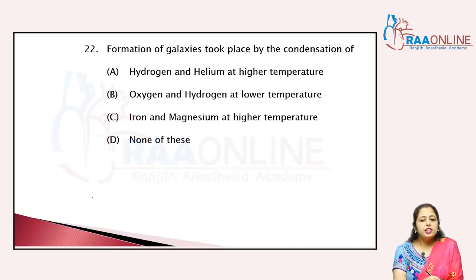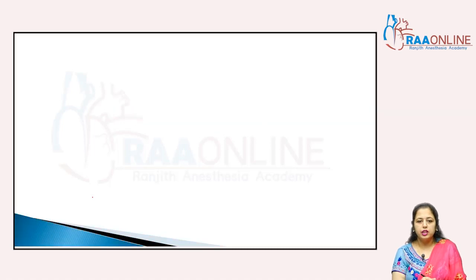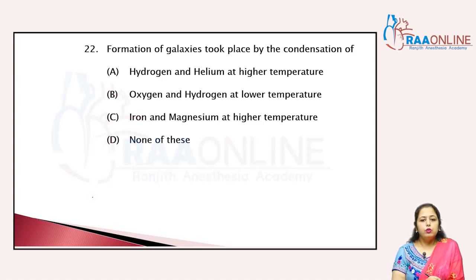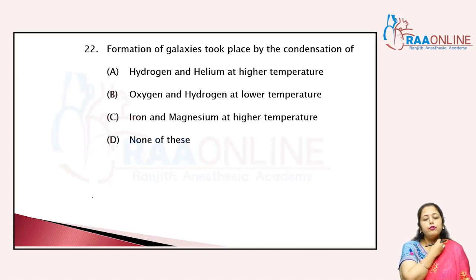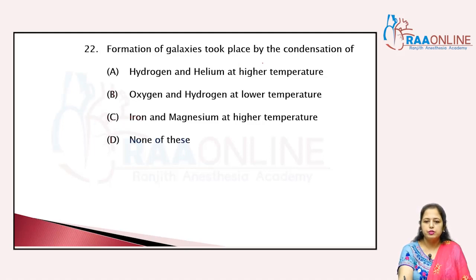Formation of galaxies is related to the Big Bang theory. The formation of galaxies took place by the condensation of hydrogen and helium at higher temperatures. Oxygen and hydrogen at lower temperature — no. Iron and magnesium at higher temperature — no. So the answer is A.